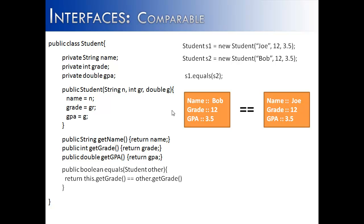But what if I want to compare them to say, are they greater or less than one another? You might wonder why one student would be greater or lesser than another. For sorting purposes — if you want to put these into an array list or array and say one comes before the other, you need a way to express that. The equals method simply cannot do that. All it can say is one is equal to the other; it can't say one is greater than or less than.